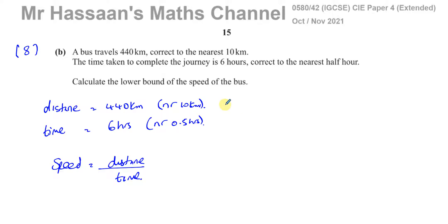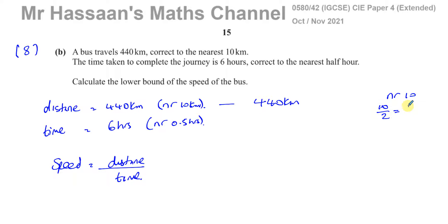Let's look at 440 kilometers first. It says to the nearest 10, so we take 10 and divide it by 2, which gives us 5. So the upper bound of the distance is 440 plus 5, which is 445 kilometers, and the lower bound is 440 minus 5, which is 435 kilometers.